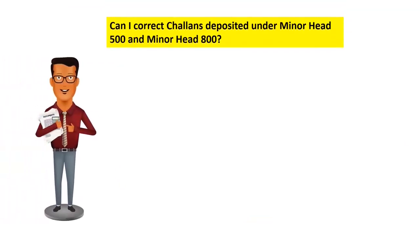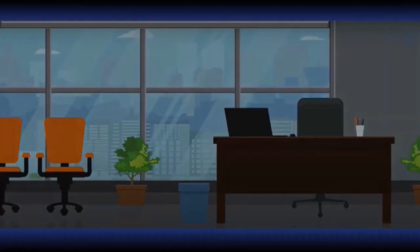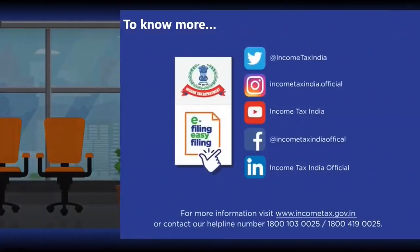Another question: can I correct Chalans deposited under minor head 500 and minor head 800? Chalan payment under minor head 500 and minor head 800 cannot be corrected and refunded. Conversely, if a Chalan payment for minor head 500 (PAN-Aadhaar linking) is done inadvertently under minor heads 100, 200, 300, or 400, you can claim the refund of such wrongly paid Chalan by filing an income tax return and claiming it as a refund.